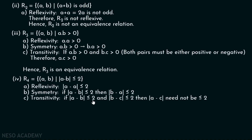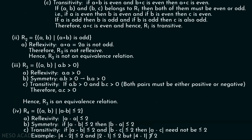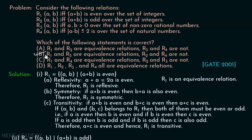Now for transitivity of R4: if the absolute value of a minus b is less than or equal to 2 and the absolute value of b minus c is less than or equal to 2, then the absolute value of a minus c need not be less than or equal to 2. For example, the absolute value of 4 minus 2 equals 2, which is ≤ 2, and the absolute value of 2 minus 1 equals 1, which is ≤ 2. But the absolute value of 4 minus 1 equals 3, which is not less than or equal to 2. Therefore, R4 is not transitive, so R4 is not an equivalence relation. Hence, option B is correct: R1 and R3 are equivalence relations, R2 and R4 are not.